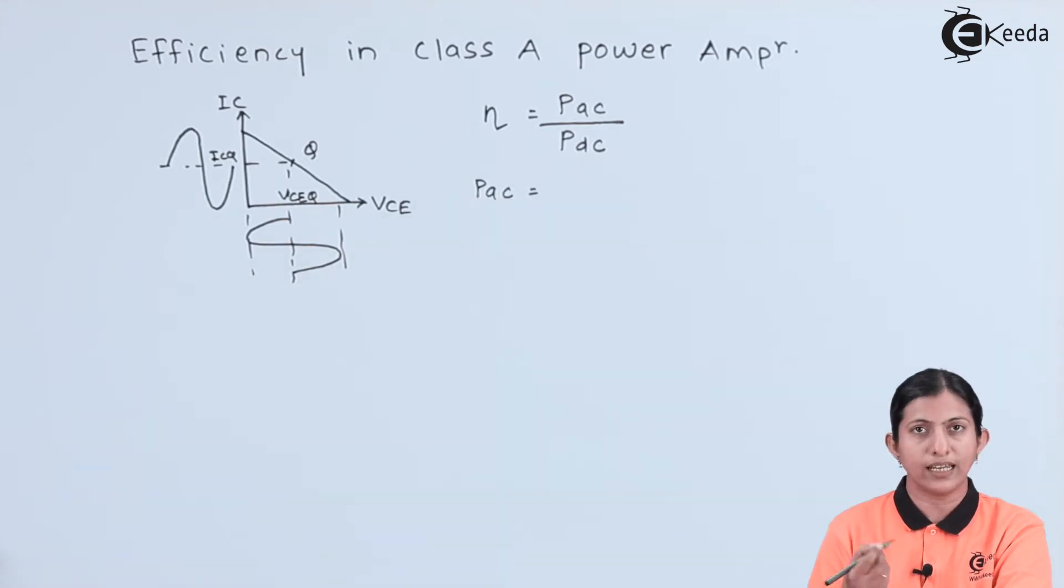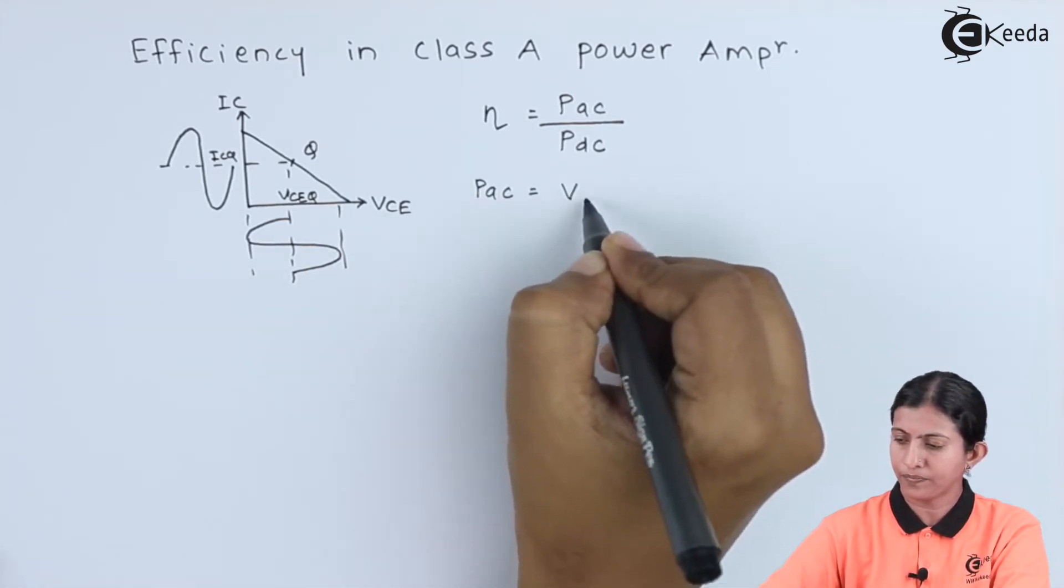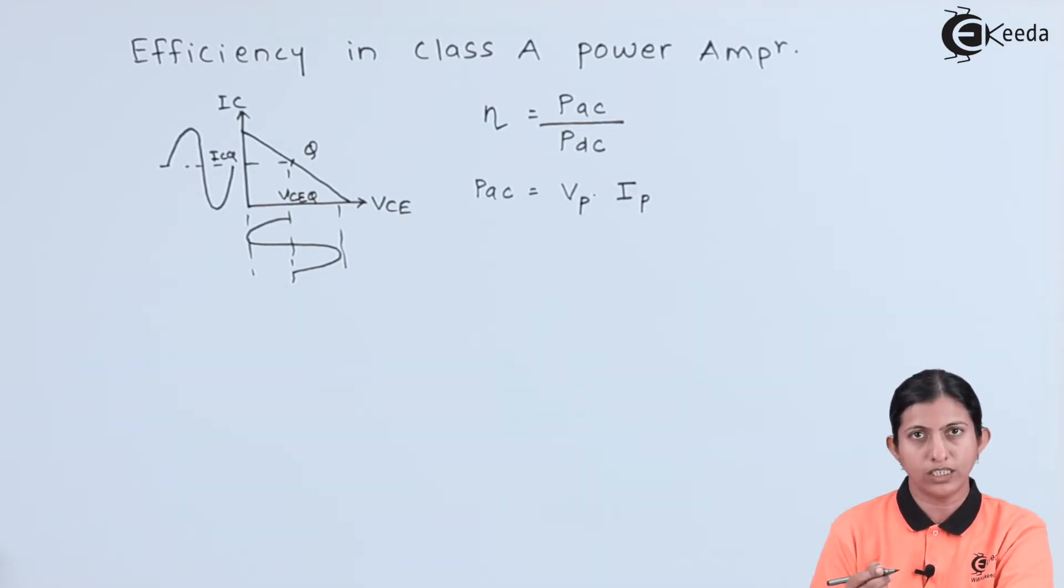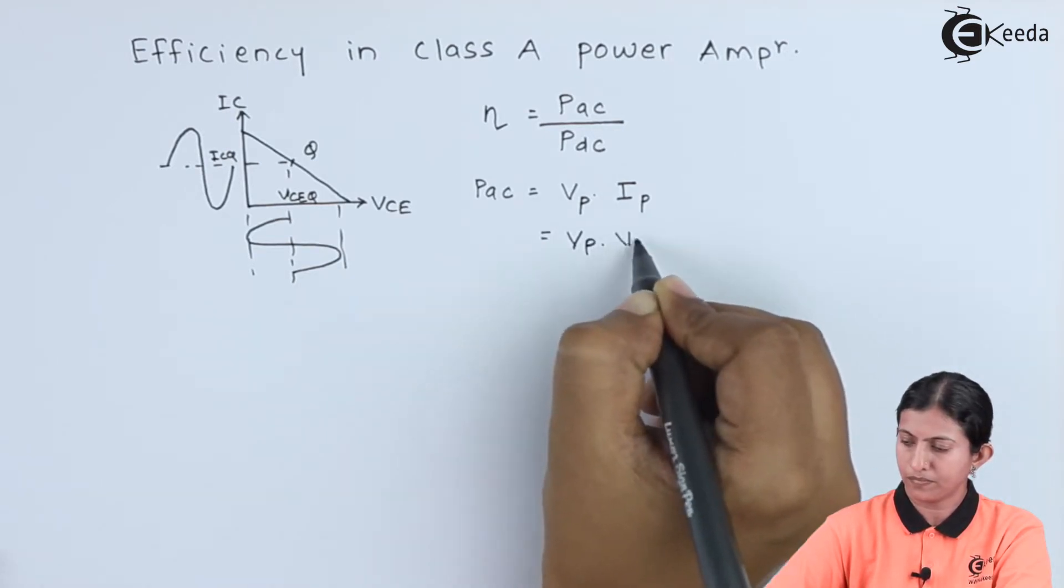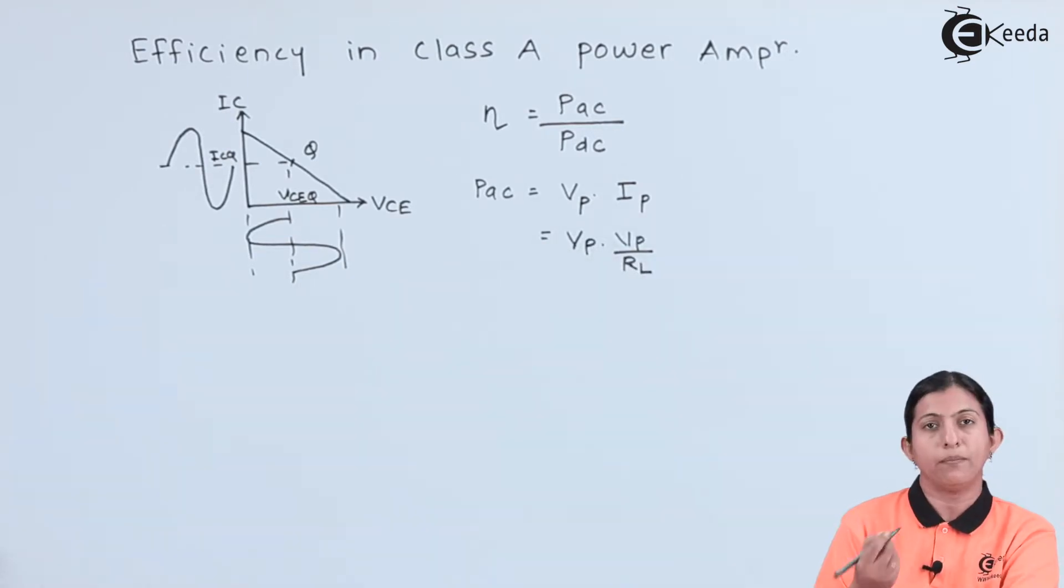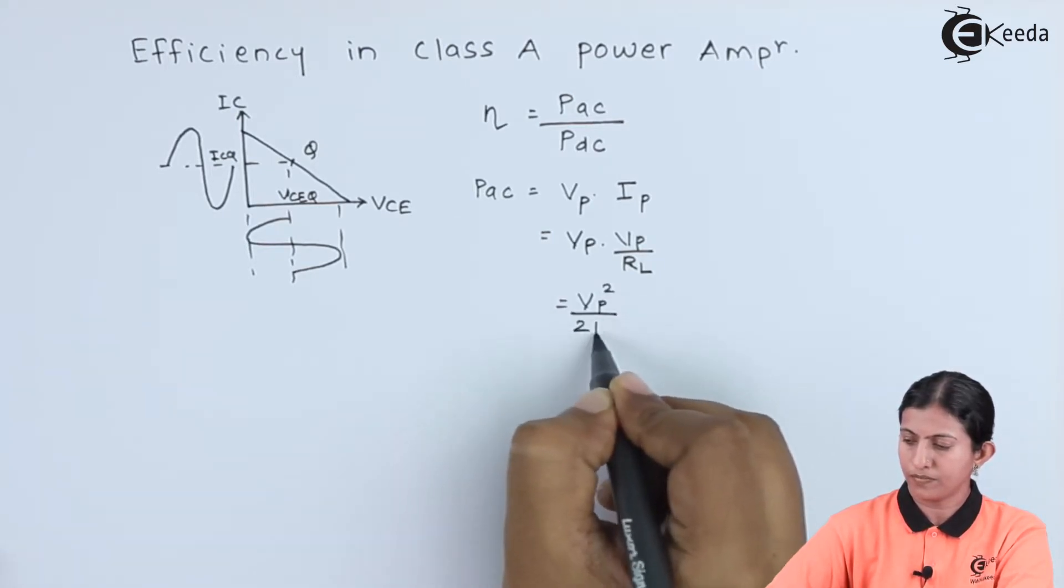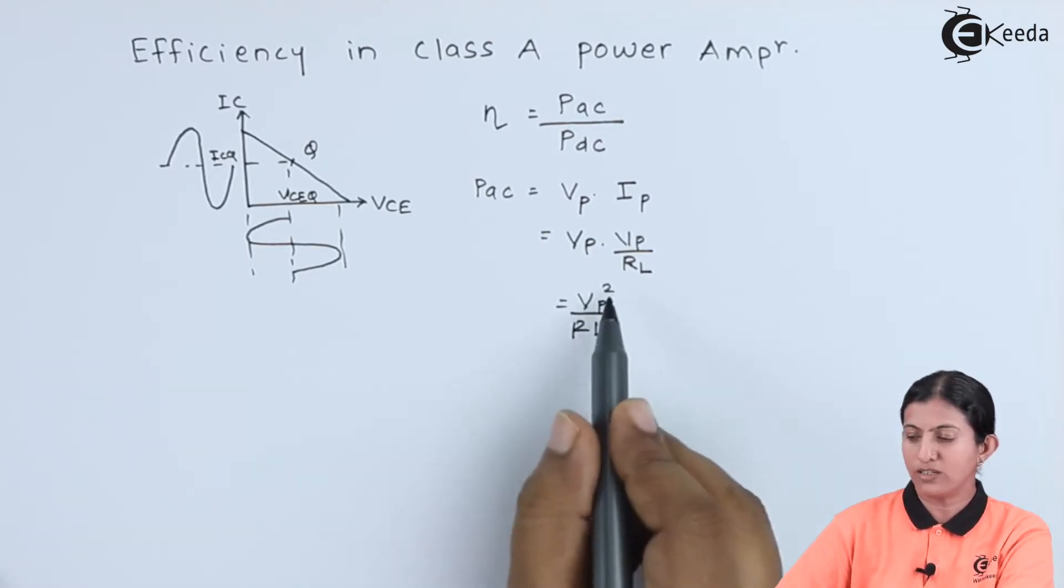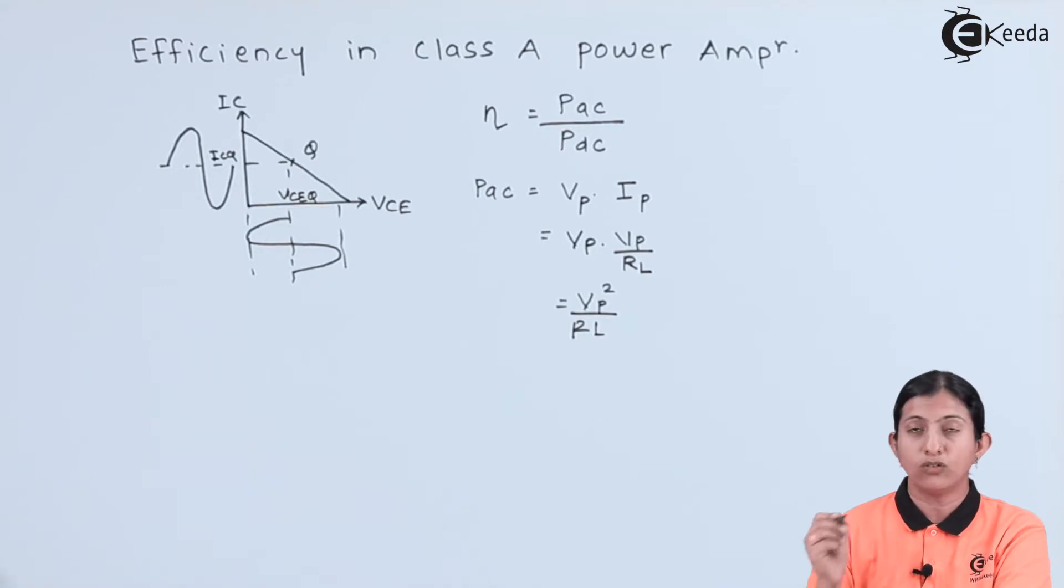PAC can be written as peak voltage into peak current, which equals Vp squared divided by RL. This peak voltage is the RMS voltage. We will write in terms of the maximum voltage.